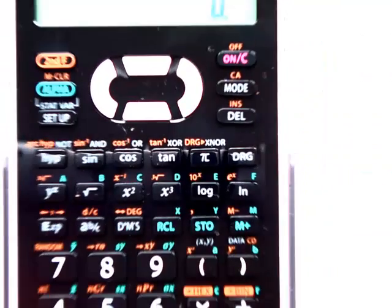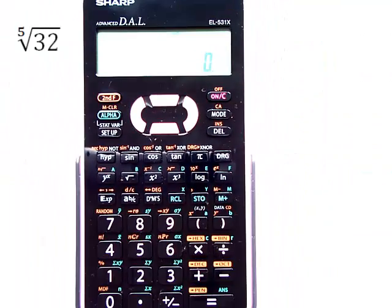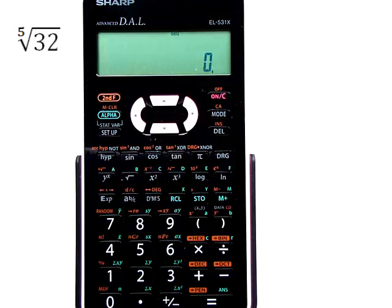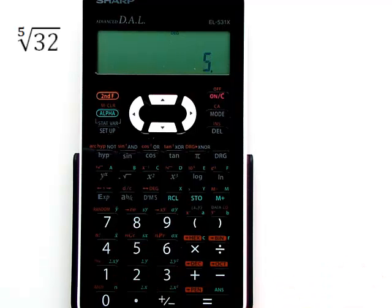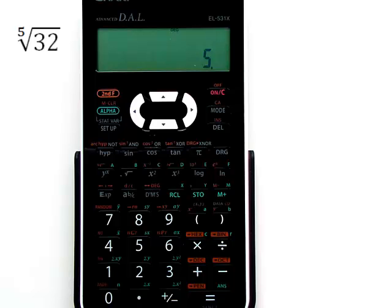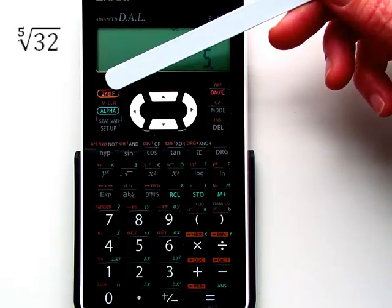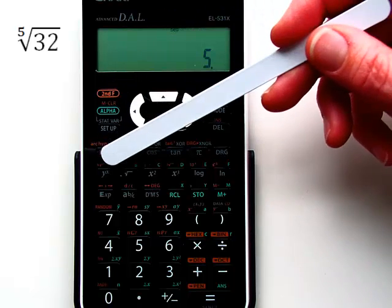So let's try calculating the fifth root of 32. First, we'll enter the root we're looking for. We're looking for the fifth root, so we'll enter 5. Then we'll use the second function key, followed by the nth root key.